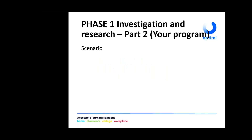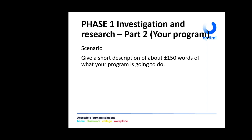Now we get to your program — this is the second part of phase one. Your program needs to have a scenario: what is your program about? You need to write a short description of about 150 words explaining what your program is going to do. Let me give you an example. If you know how Noughts and Crosses looks, you have a screen with nine blocks.